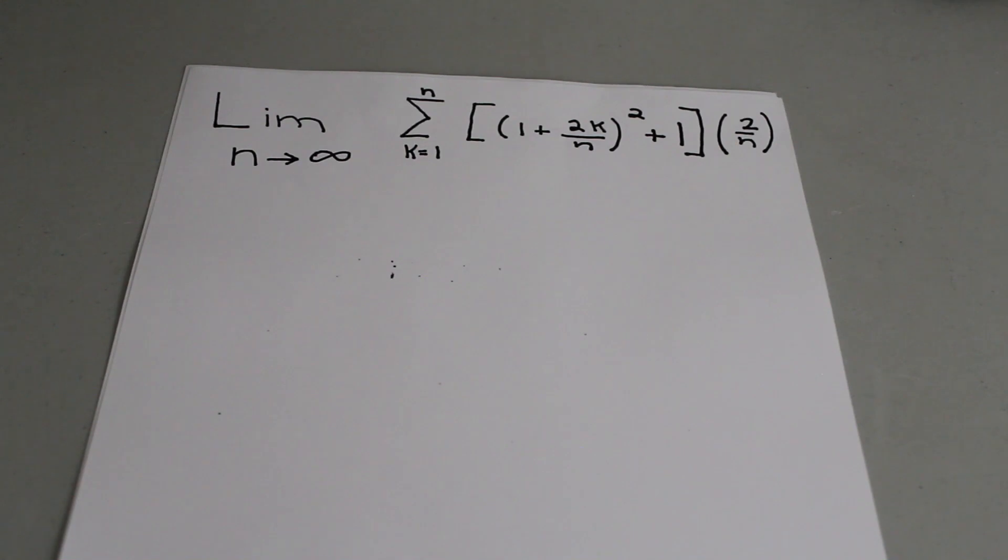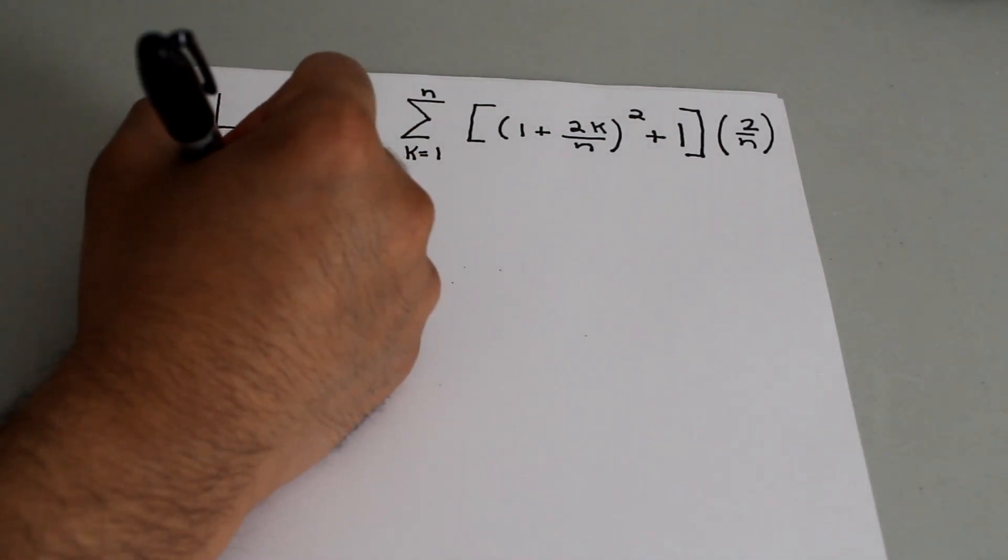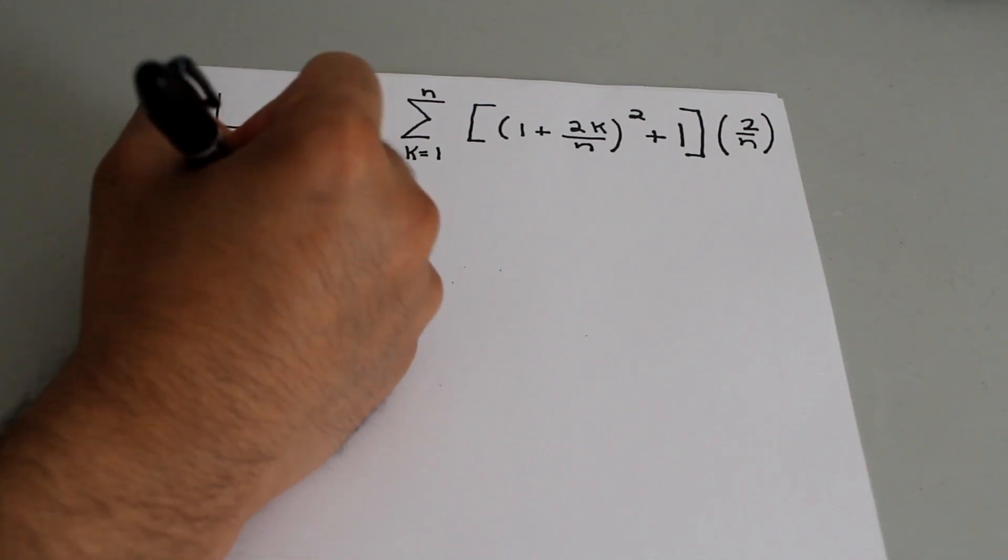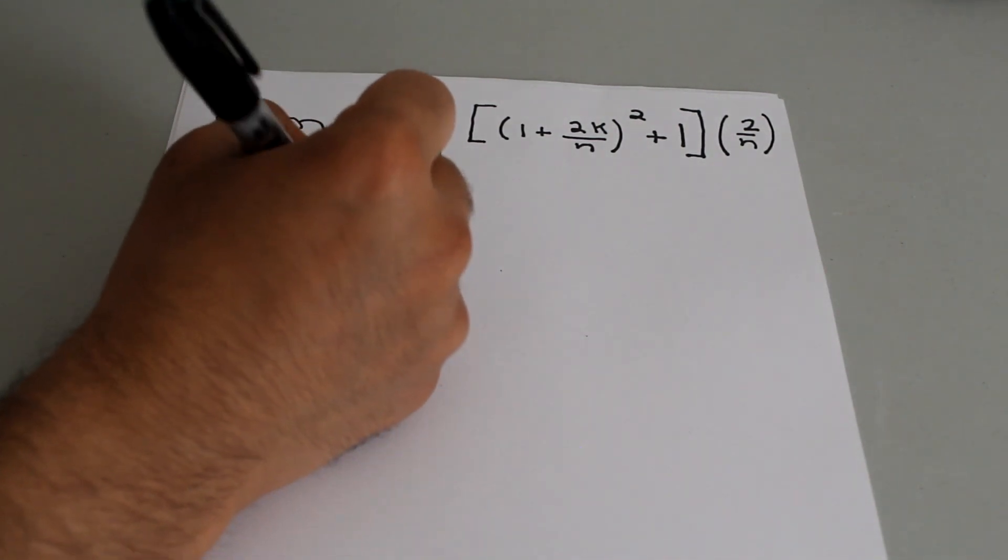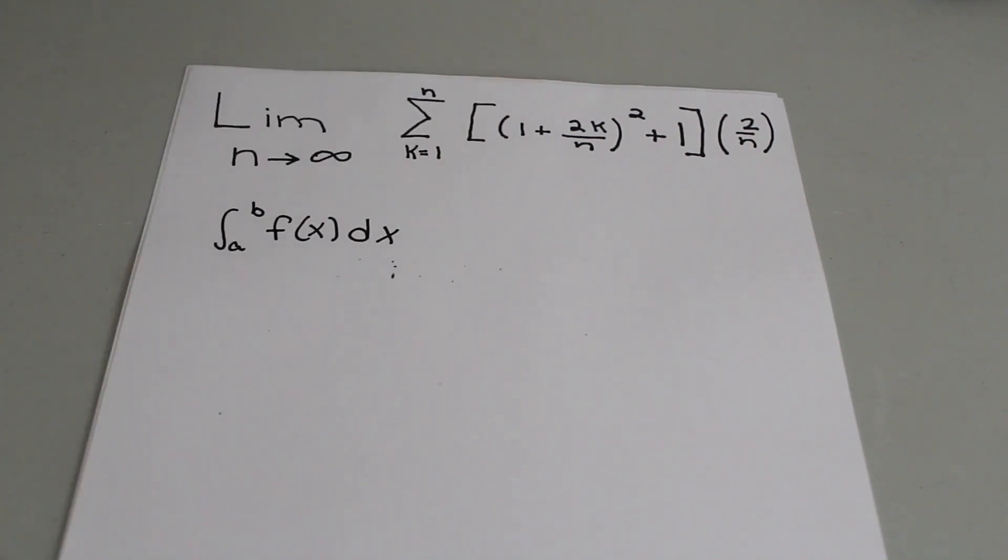If you want it to be a definite integral in the end it would look something like integral from a to b of f of x dx. Now how do we get this to look something like this?